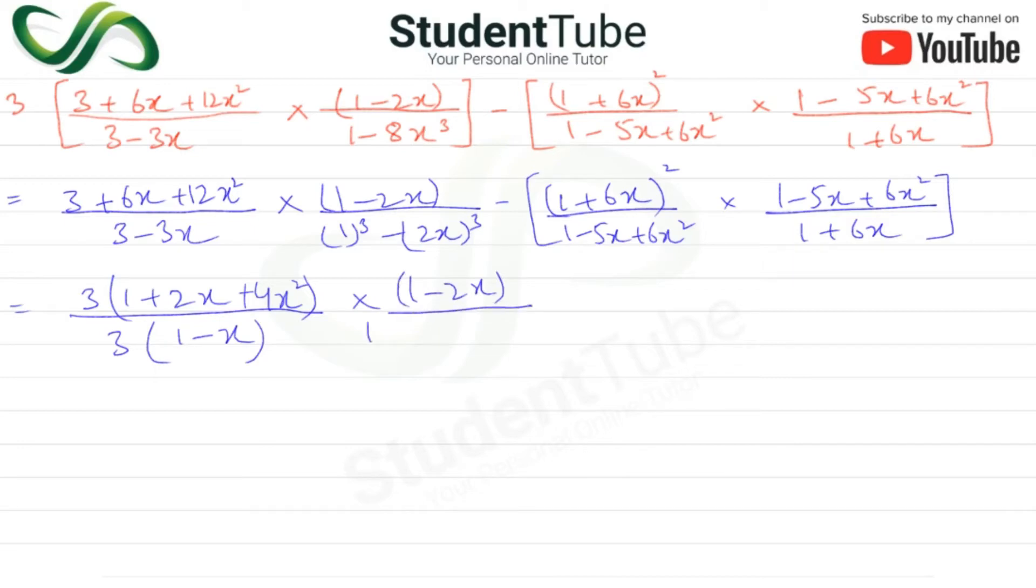Then 1 minus 2x and 1 plus 2x plus 4x squared. Then 1 minus 12x squared will be the same. In the next step, 1 plus 6x.